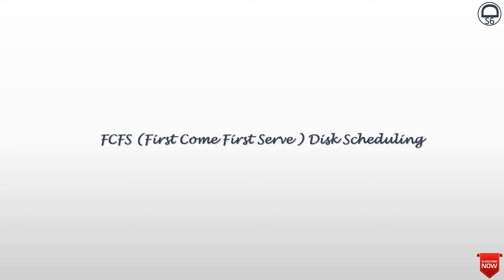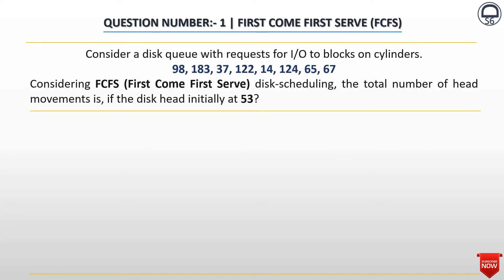First Come First Serve disk scheduling. Consider a disk queue with requests for I/O to blocks on cylinders: 98, 183, 37, 122, 14, 124, 65, and 67. Considering FCFS, that is First Come First Serve disk scheduling, the total number of head movements is, if the disk head is initially at 53.